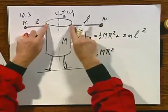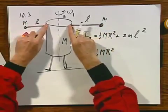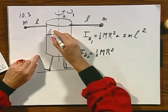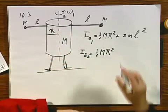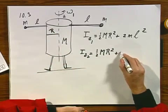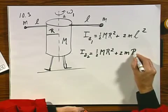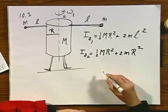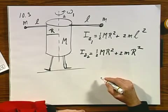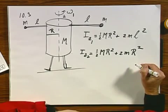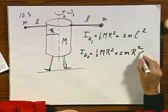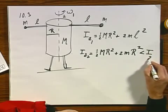But when these arms have been brought in and these masses are at the distance little r—this is little, this is capital R, sorry—then I would have plus 2m r squared, and that's the moment of inertia which it is right now. And this moment of inertia is less than I_z1.